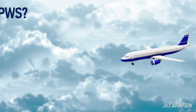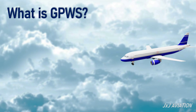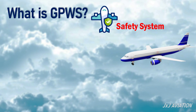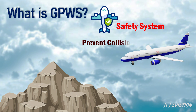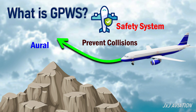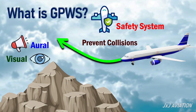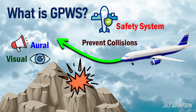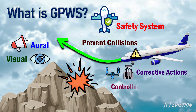First, let's look at what is the ground proximity warning system, or GPWS. GPWS is a safety system installed on modern aircraft. It is designed to prevent collisions with terrain or obstacles. This system generates aural and visual alerts when the aircraft is flying towards terrain and a collision is likely. When the alerts are triggered, the crew must take corrective actions to prevent controlled flight into terrain, including CFIT accidents.